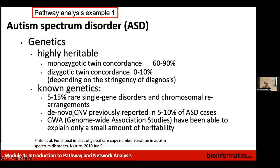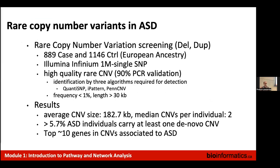Before this study — published around 2010 — people had a general understanding that copy number variants that were de novo, or not inherited from the parents, might explain five to ten percent of ASD cases. The Scherer lab was interested in this finding and measured copy number variants in about a thousand cases and controls. Cases were individuals with severe autism; controls were those without. They used a SNP array to measure SNPs across the genome and then converted those to copy number variants.